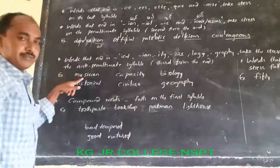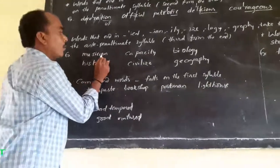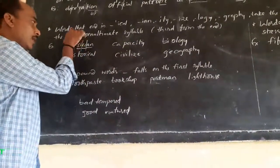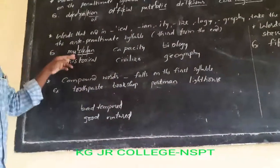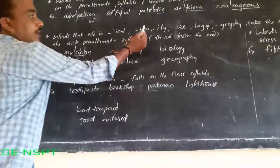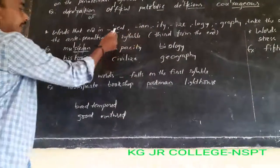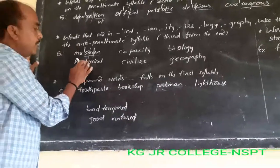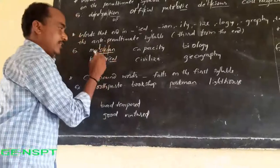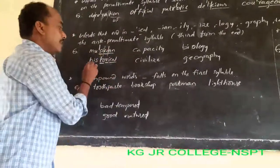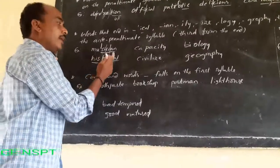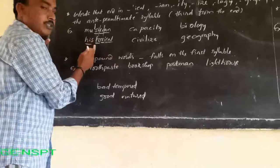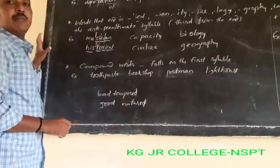For example, 'musician': mu-si-cian — one, two, three. The last syllable is '-cian', last to second is '-si', and last to third is 'mu'. So the stress falls on 'mu': MU-si-cian. Similarly, 'historical': his-tor-i-cal. The last syllable is '-cal', last to second is '-ri', last to third is '-tor'. So 'historical' — stress falls after 's' and before 't': his-TOR-i-cal.